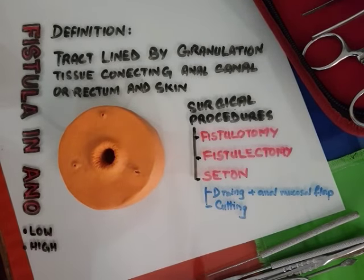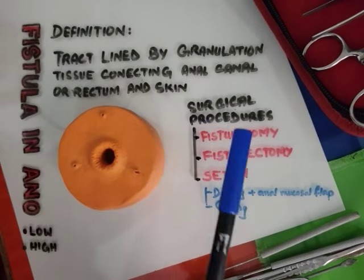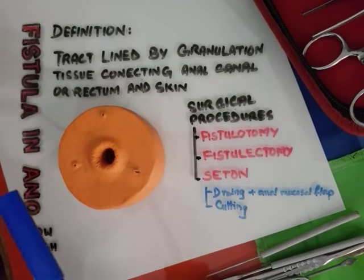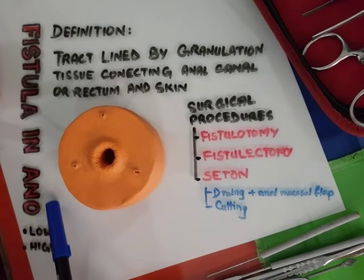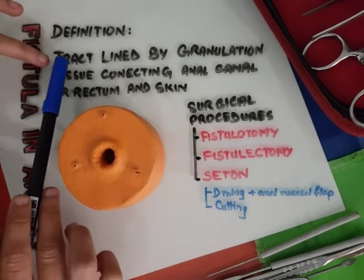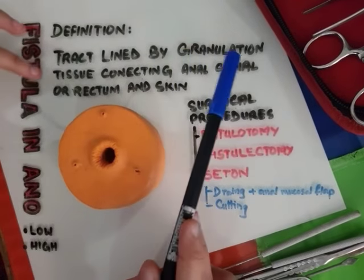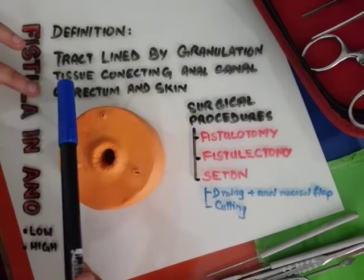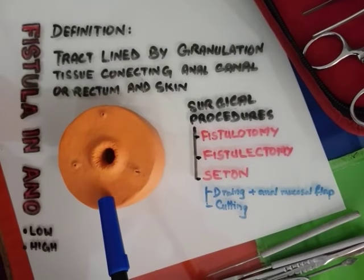Bismillahirrahmanirrahim. Today I am going to discuss the surgical procedures used in the treatment of fistula in ano. First we should know what is a fistula in ano. It is defined as basically a tract lined by granulation tissue connecting the anal canal or rectum and the perianal skin.